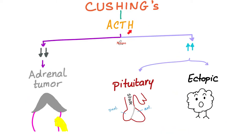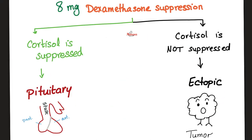If ACTH is low, it means the problem is in the adrenal, because if the adrenal cortex is making more cortisol, the pituitary will shut down ACTH production. If ACTH is high, this could be the pituitary making too much ACTH, or it could be an ectopic cancer. When a cancer secretes a hormone, we call this paraneoplastic syndrome. To differentiate pituitary from ectopic cancer, order the high-dose 8 mg dexamethasone suppression test. If cortisol suppresses back to normal, it's a pituitary tumor. If cortisol remains high, it's ectopic — because cancer does not obey rules and does not suppress.